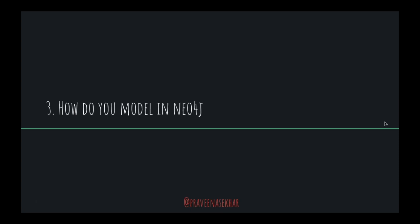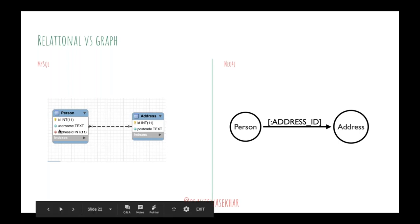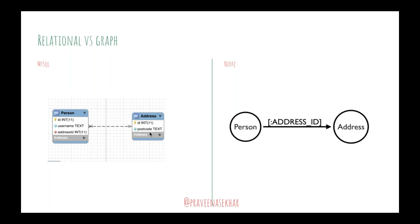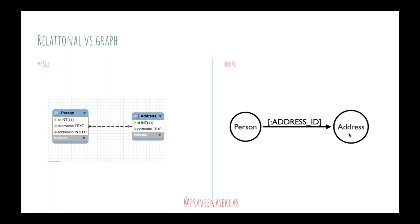The next question is: now that I know why Neo4j is better than a relational database, how do you model in Neo4j? If you're used to a relational database like MySQL, you might recognize an ER diagram. Here's one where a person lives at a certain address — a person has an ID, username, and address ID; the address has an ID and a postcode. In MySQL you'd use a foreign key join. In Neo4j, you don't need that — you just draw a relationship between the two nodes. The person and the address are simply linked with an 'address ID' relationship.